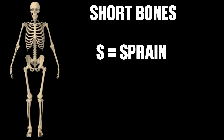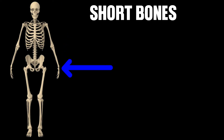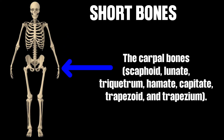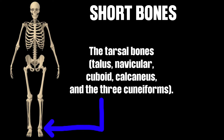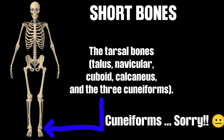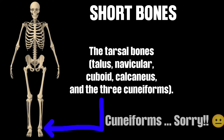Examples of short bones include, in the wrist, the carpal bones: the scaphoid, lunate, triquetrum, hamate, capitate, trapezoid, and trapezium. Then for the ankle, we can find the tarsal bones: the talus, navicular, cuboid, calcaneus, and the three cuneiforms. Note that when listing the carpal bones, pisiform was skipped because pisiform is actually a sesamoid bone, not a short bone.